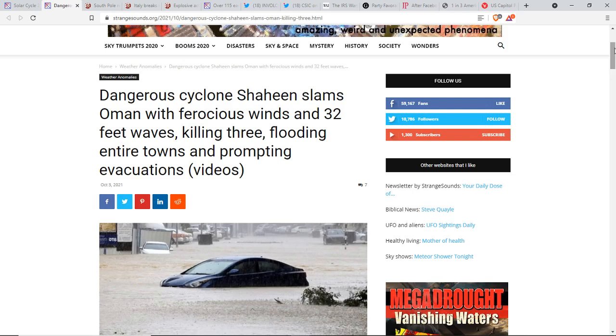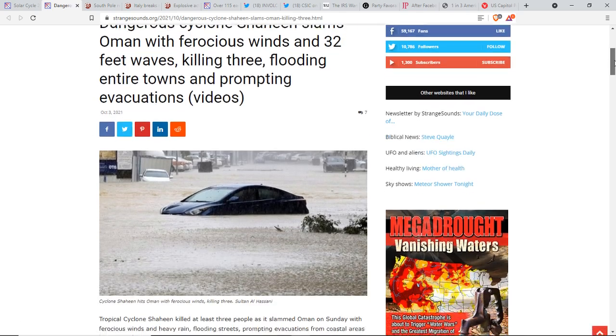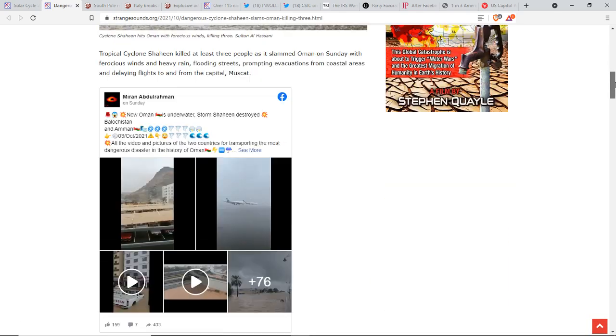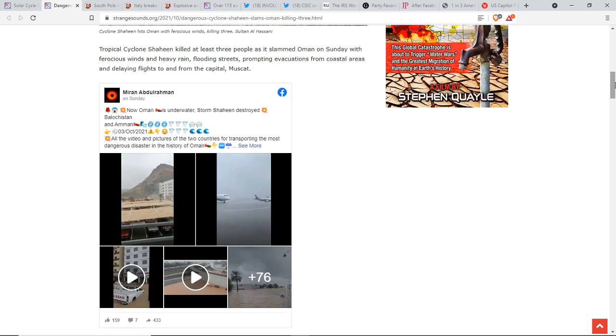Dangerous cyclone Shaheen slams Oman with ferocious winds. 32-foot waves killing three flooding entire towns and prompting evacuations. Look at that landslide coming down. Oman is underwater. This is the weather events that we're seeing around the globe.